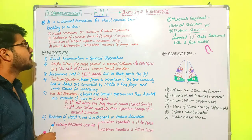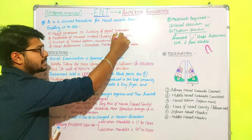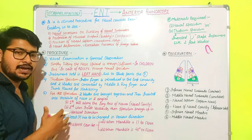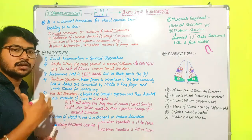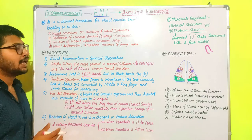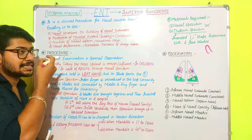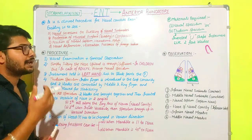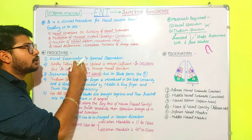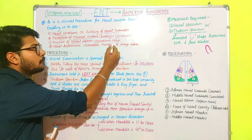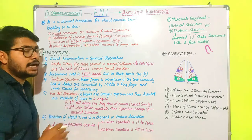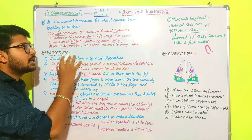We can observe nasal secretions, swelling of nasal turbinates — there are three nasal turbinates — and any kind of inflammation present inside. Due to inflammation, there can be watery secretion or pus secretion, which we can identify through this method. We can also check the properties of the mucosal surface, compare the two nasal cavities, check for deviation of the nasal septum, hematoma, polyps, nasal deformities, and ulcerations.